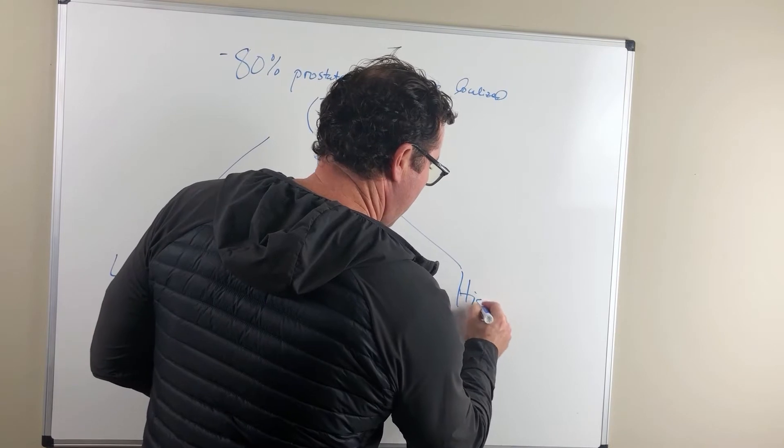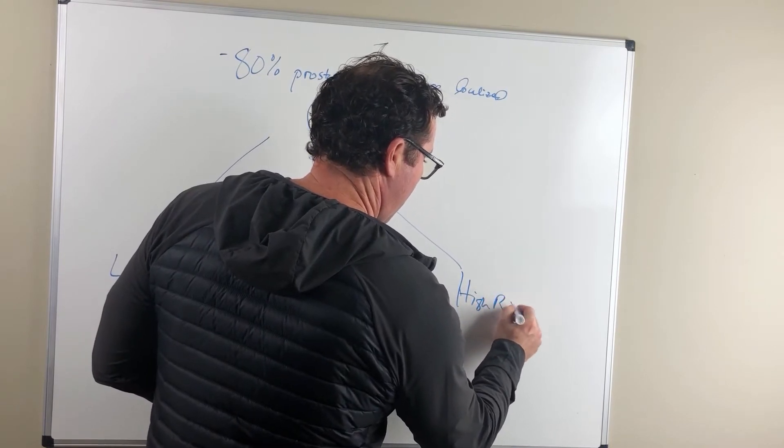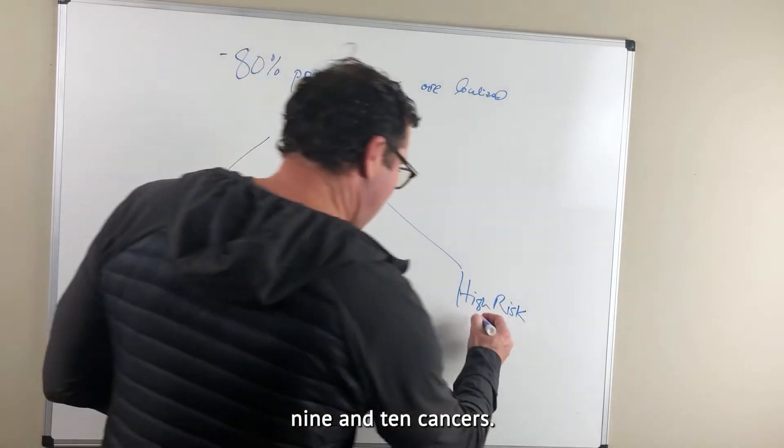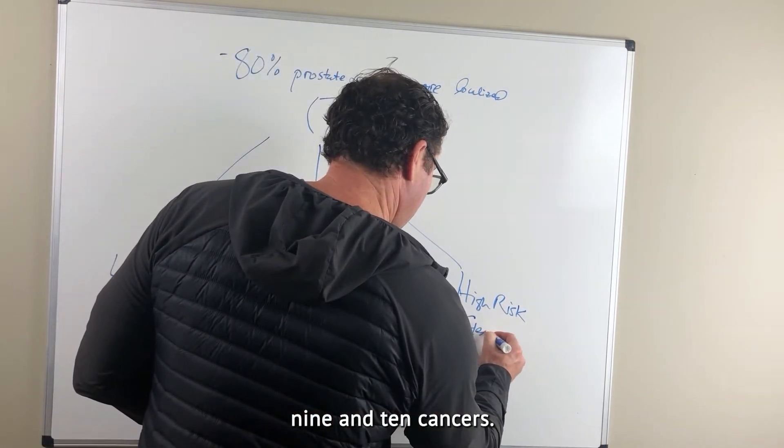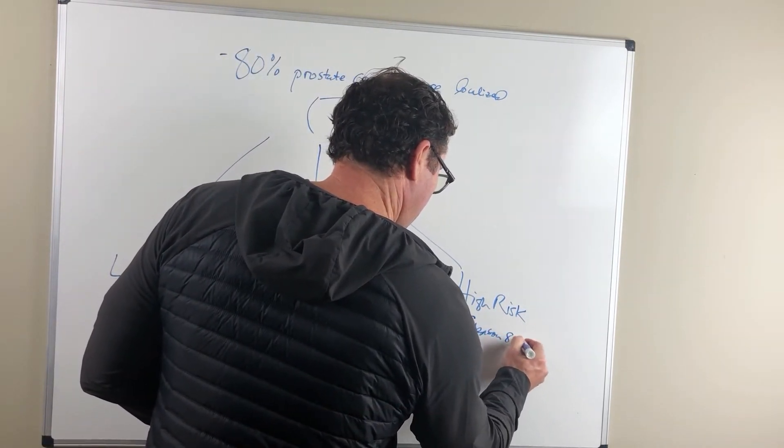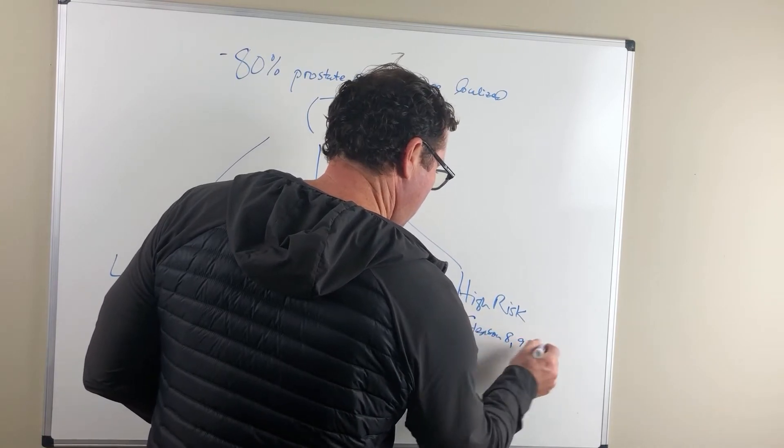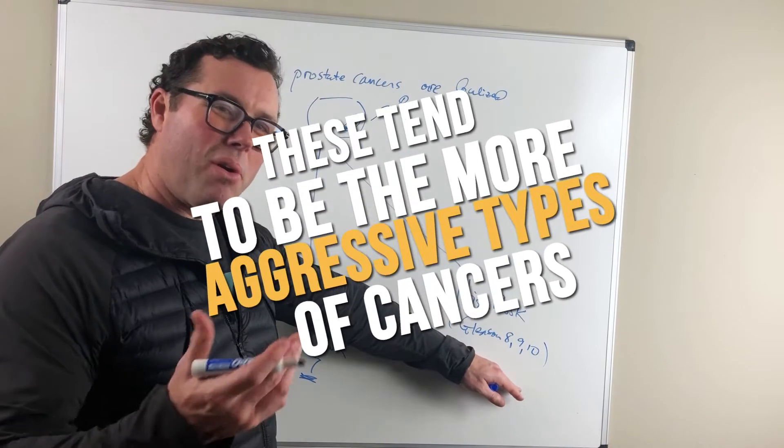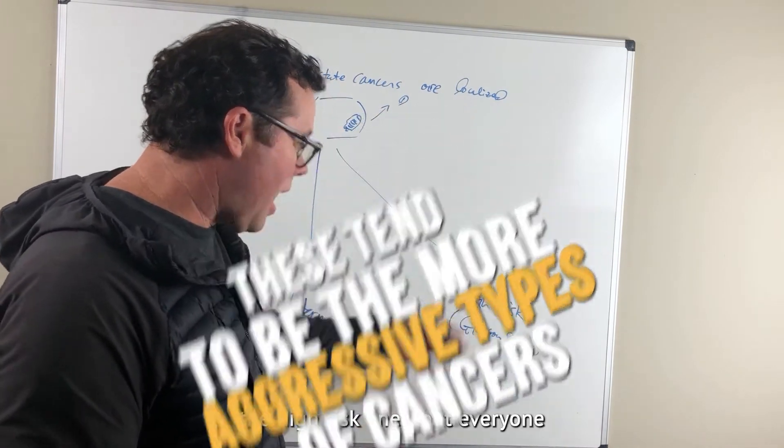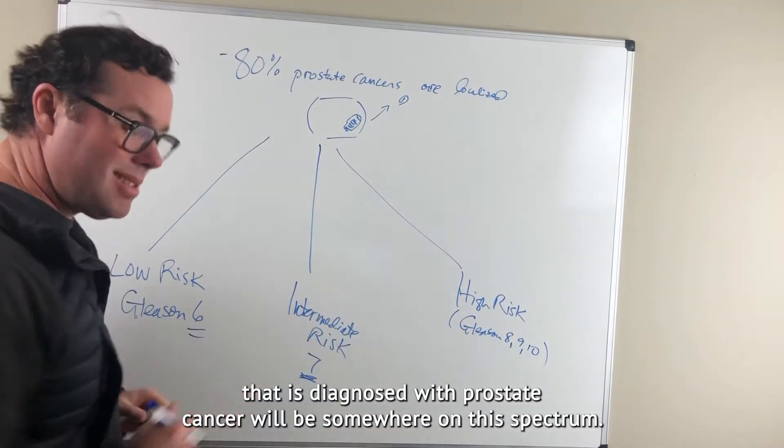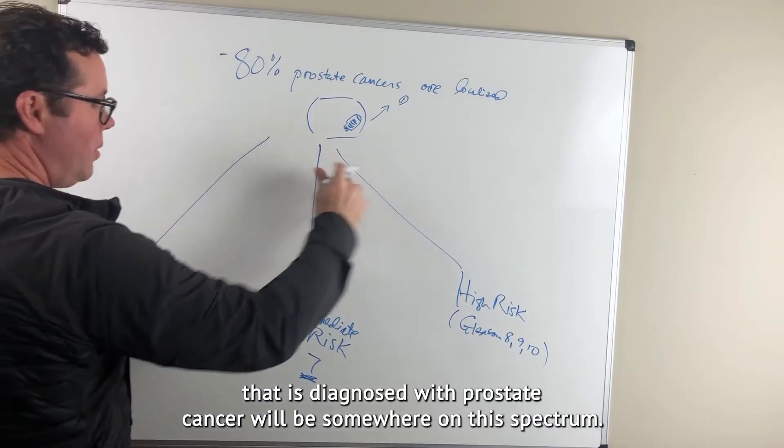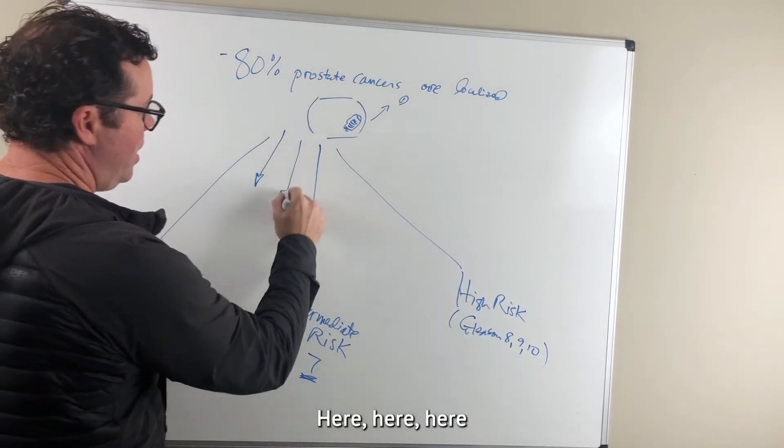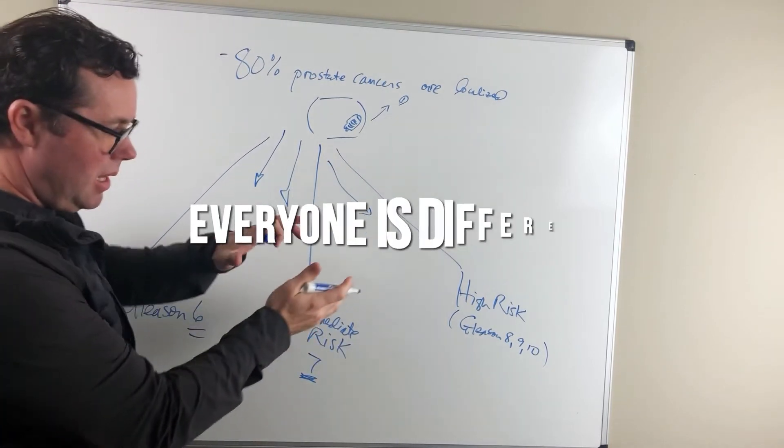High risk. These are Gleason 8, 9, and 10 cancers. These tend to be the more aggressive types of cancers. But everyone that is diagnosed with prostate cancer will be somewhere on this spectrum. Here, here, here, here. Everyone is different.